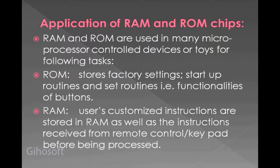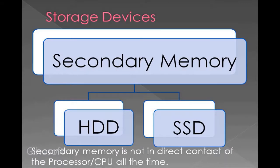This slide about microprocessor-controlled devices is very important from the exam point of view — the examiner often asks about the function of ROM and RAM in such devices, so learn it carefully. Moving on to secondary memory: we have two types — hard disk drive (HDD) and SSD. Remember that secondary memory is not in direct contact with the processor all the time; whatever goes between the hard drive and processor passes through RAM or cache.